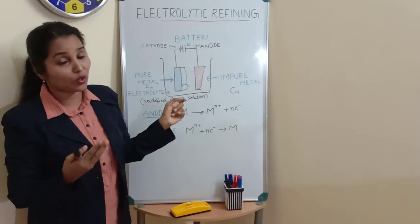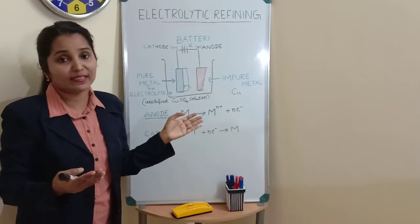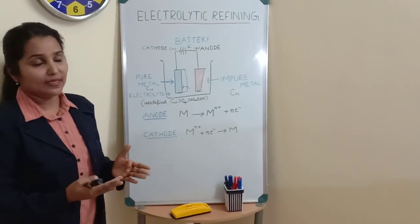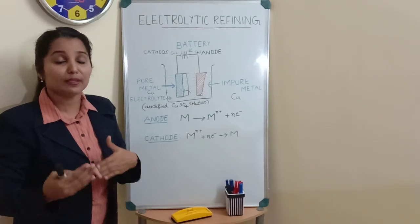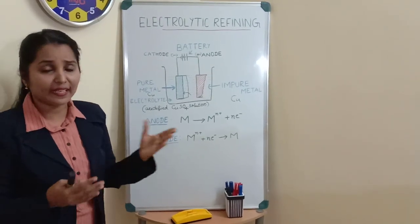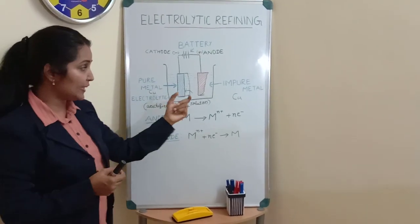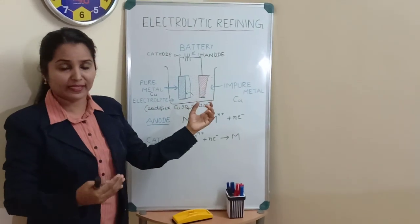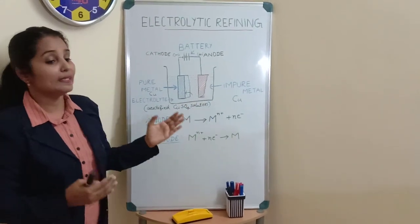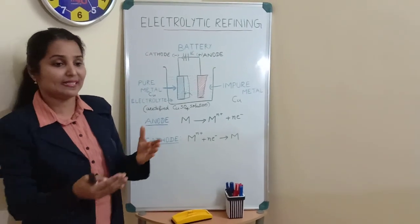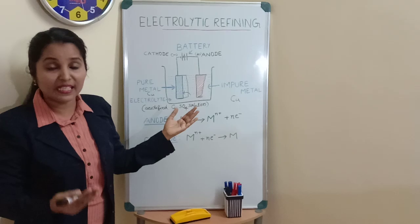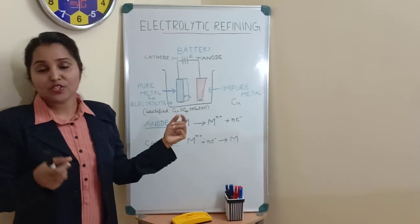This anode mud or anode sludge is not necessarily sand, but can contain many other useful metals. For example, in the case of blister copper, when we take blister copper for refining, the impurities will contain important metals like antimony, selenium, silver, gold, etc.